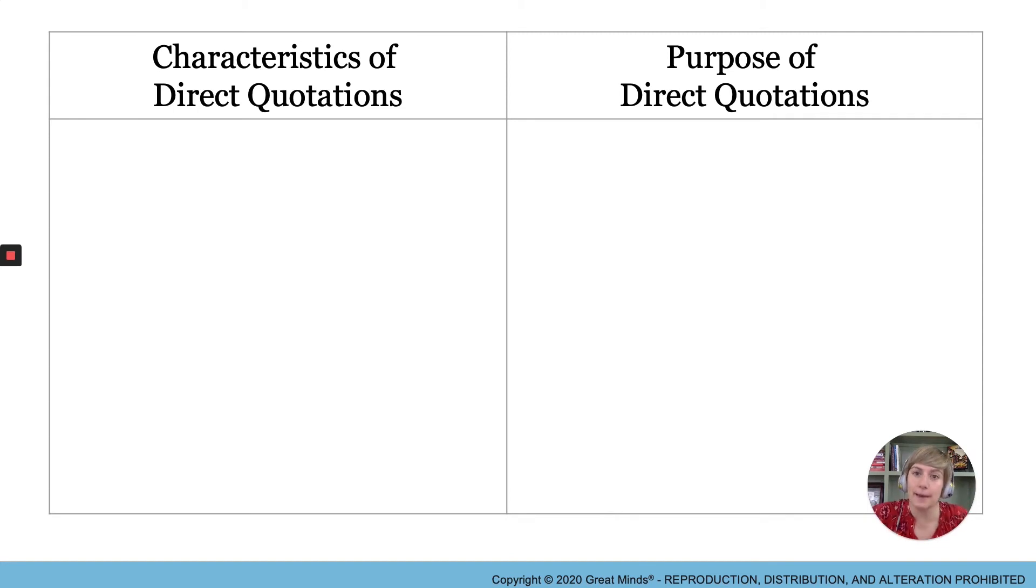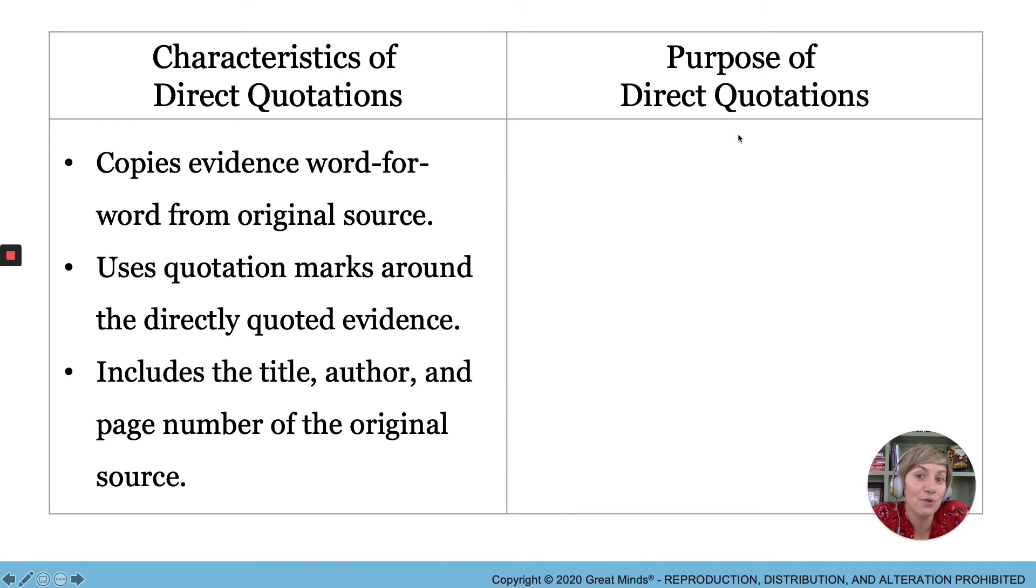Okay, so thinking back to the example from We Are The Ship. It was the fifth end note for first inning. What do you know about directly quoted evidence? Do you know some of these things? This is when the words are copied word for word from the original source. Exactly how the original source said it. There's always the use of quotation marks around the directly quoted evidence. That's the indication that it's directly quoted. And similar to paraphrasing, it needs to include the title, author, and page number of that original source.